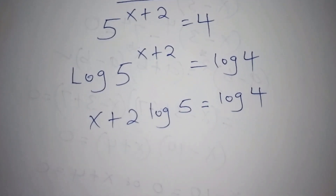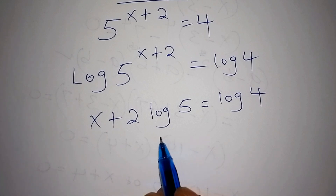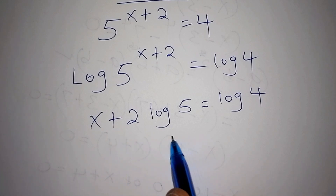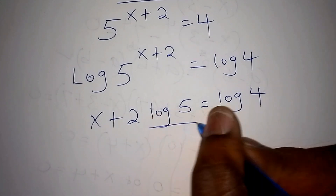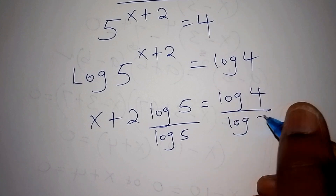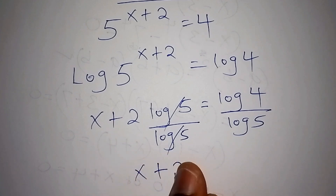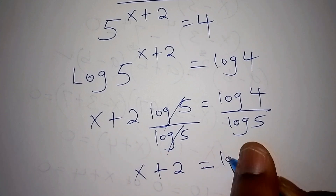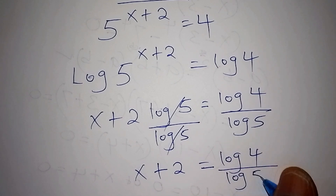From here we proceed. For us to remain with x plus 2, we shall divide both sides by log 5 — dividing here by log 5 and this side also by log 5. The log 5 and log 5 cancel, and we are left with x plus 2 is equals to log 4 all over log 5.